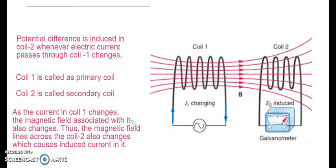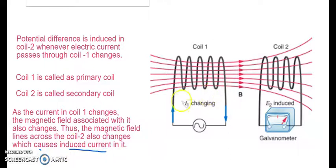A potential difference is induced in coil 2 whenever the electric current through coil 1 changes. Coil 1 is called the primary coil and coil 2 is called the secondary coil. As the current in coil 1 changes, the magnetic field associated with it also changes, and thus the magnetic field lines across coil 2 also change, which causes the induced current. We can change the current by changing the battery source, or we can keep moving coil 2 as we saw in the experiment.